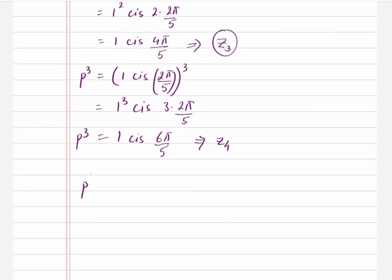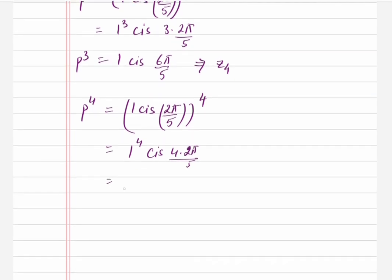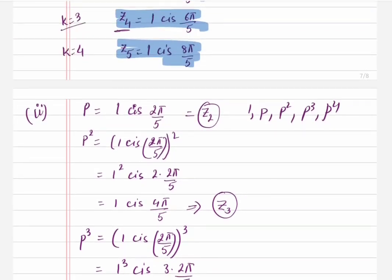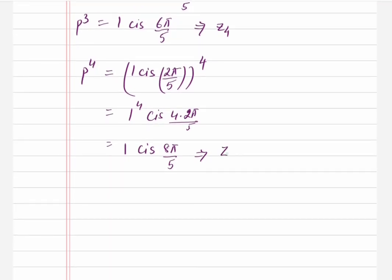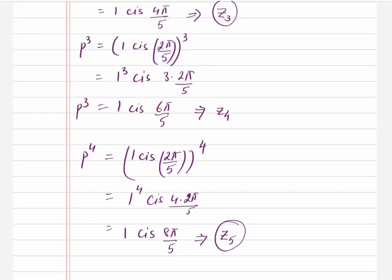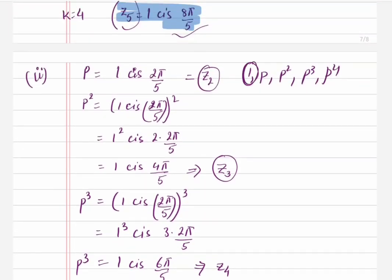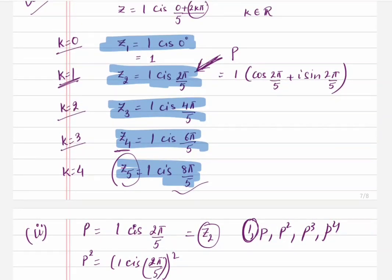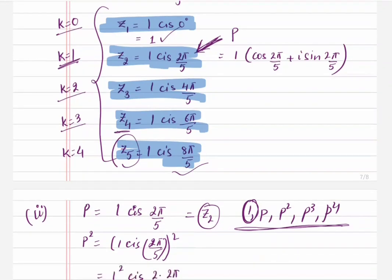And p⁴ = (1 cis(2π/5))⁴ = 1⁴ cis(4 × 2π/5) = 1 cis(8π/5), which equals z₅. The only root left is z₁ = 1, which is just 1. So all five roots can be written as 1, p, p², p³, and p⁴. Cool — this wasn't that bad!